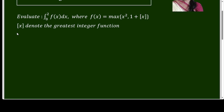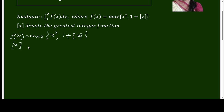Let us write the greatest integer function. The question is: what is f(x)? f(x) is the maximum — we have to choose between x squared and 1 plus the greatest integer function. The greatest integer function equals the greatest integer less than or equal to x.